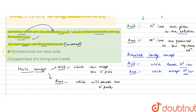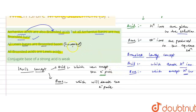The third statement is: all Bronsted acids are Lewis acids. Bronsted acids are those which donate H⁺ ions, and Lewis acids are those which accept electron pairs. A Bronsted acid donating H⁺ ions does not necessarily mean it will always accept electron pairs. So this statement is also incorrect.